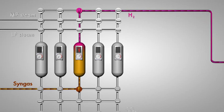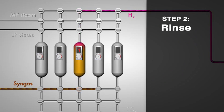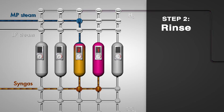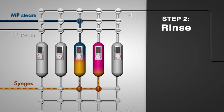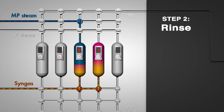Once the sorbent is saturated, another reactor takes over and step two starts, the rinse. Steam enters the reactor from the top and pushes the syngas out of the voids and into the next reactor.